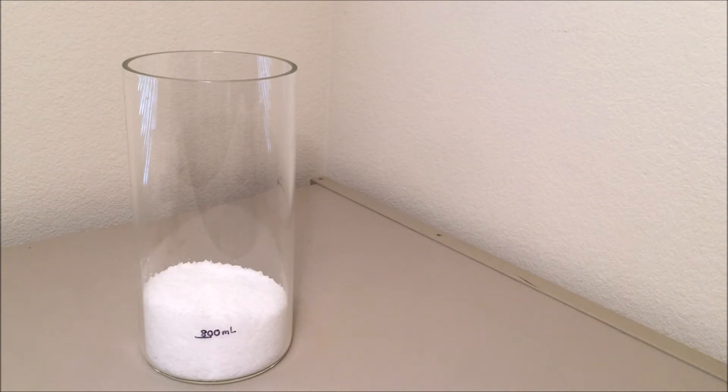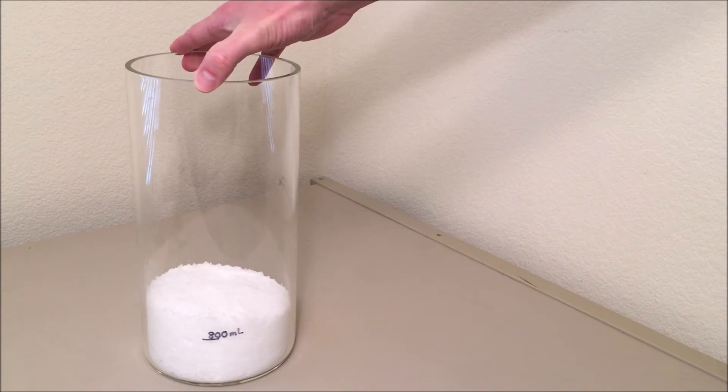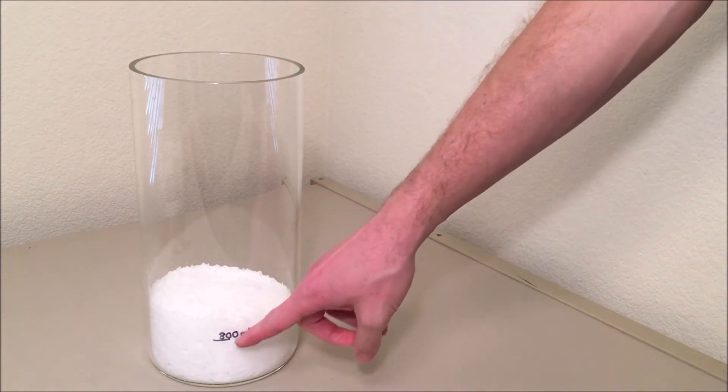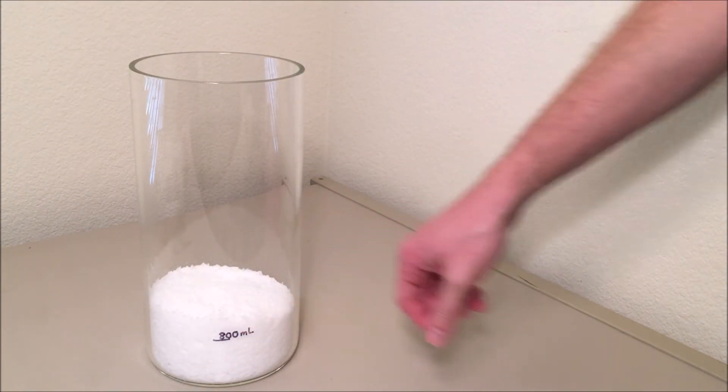After you've put in 900 grams of the magnesium chloride, you'll see that it most likely is above the 800 milliliter mark. That's okay.